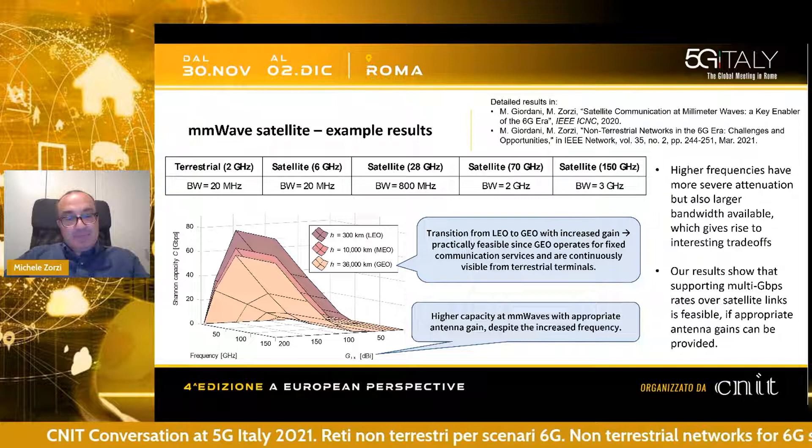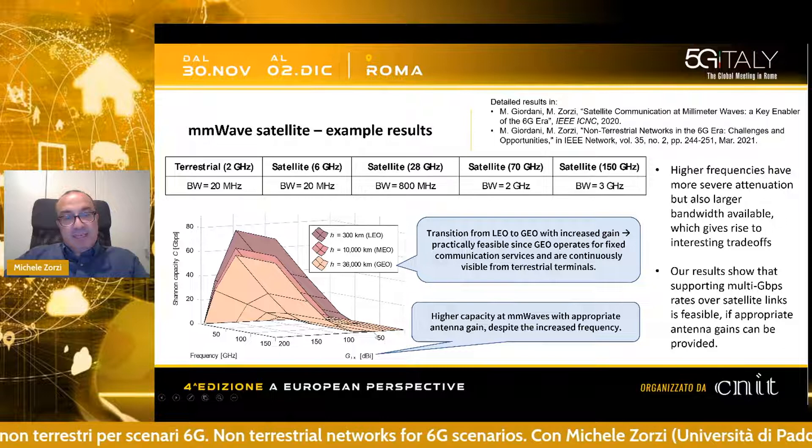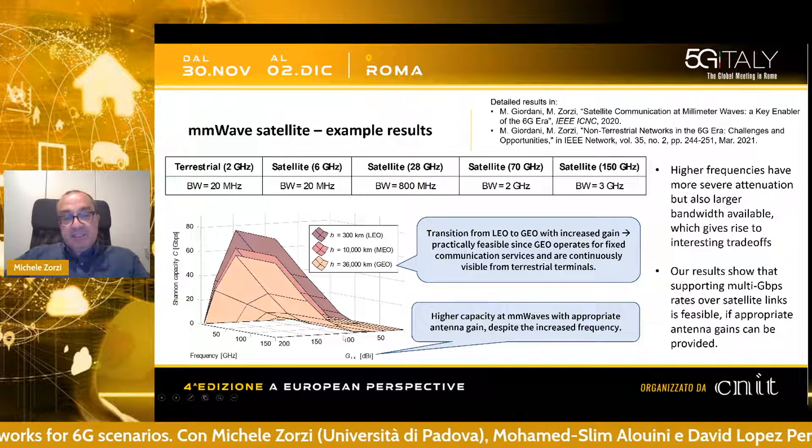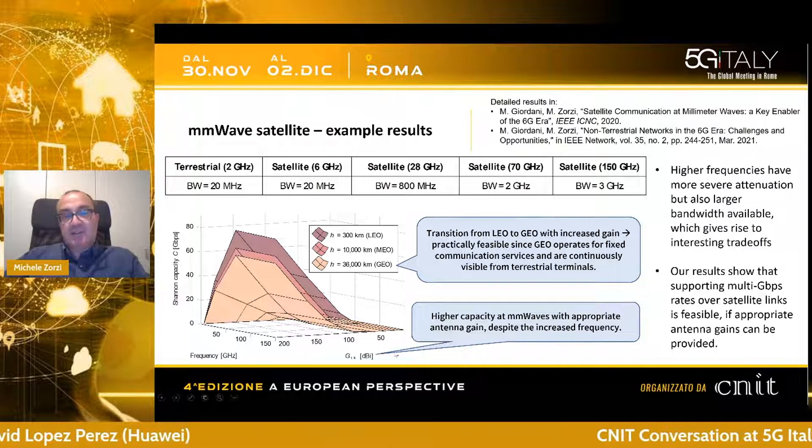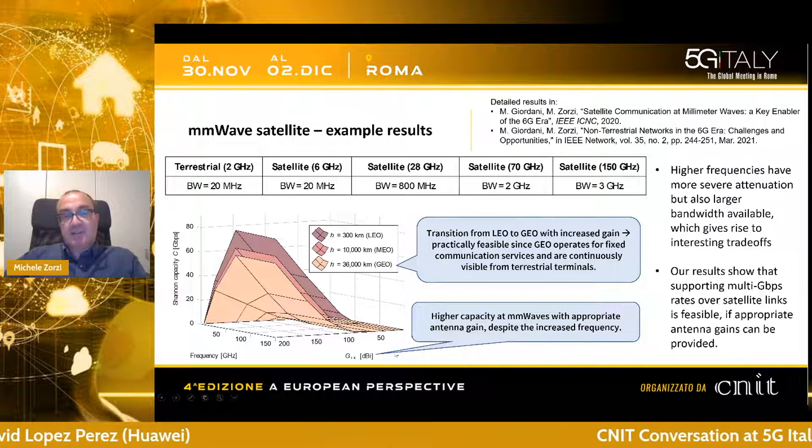What is important from this picture is that if we can provide antenna gains of more than 50 dB, then we can access rates on the order of a few gigabits per second. So the answer is yes — if we can provide enough antenna gain, which is not outrageously high and is actually achievable in practice, we can make the system work. That is, of course, good news.